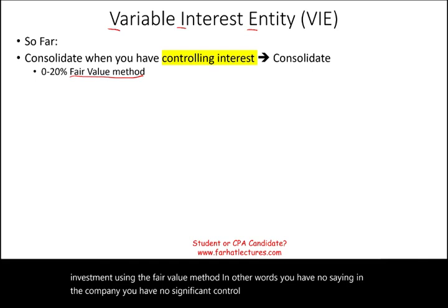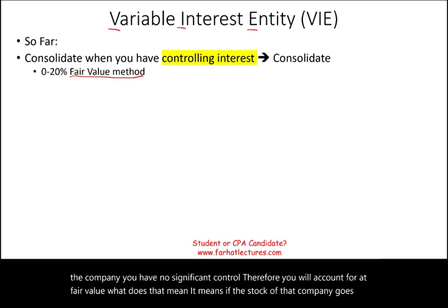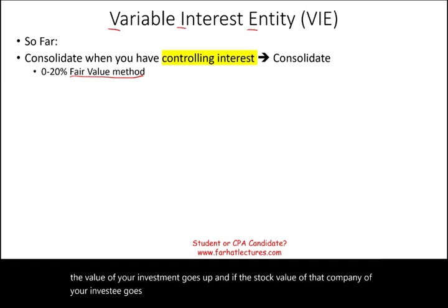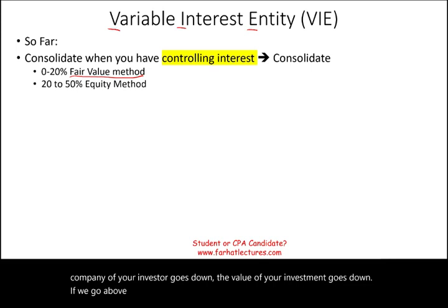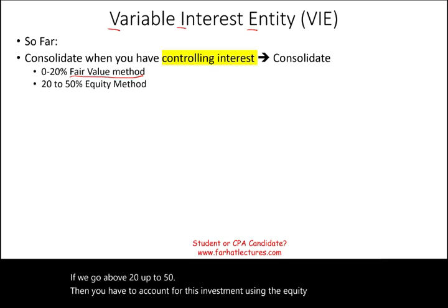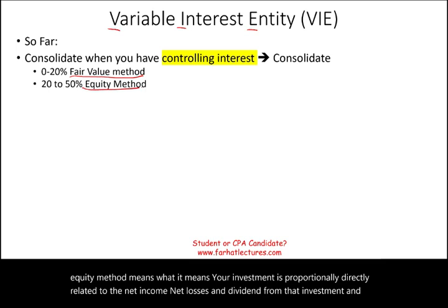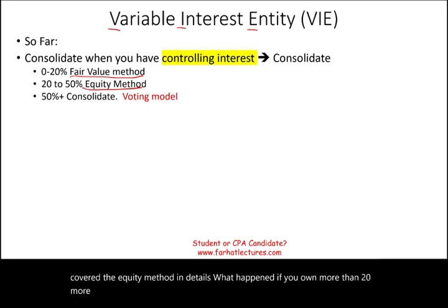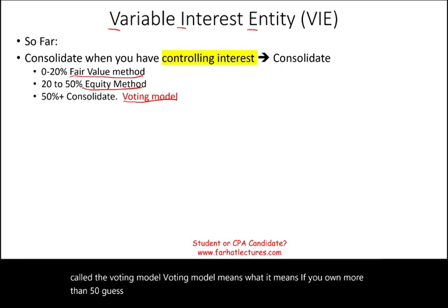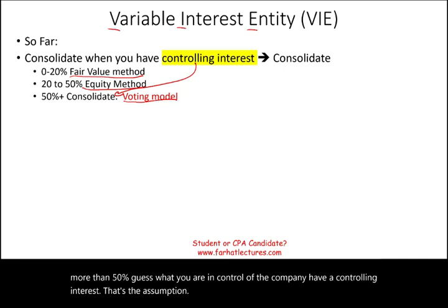If we go above 20% up to 50%, then you have to account for this investment using the equity method, which means your investment is proportionally directly related to the net income, net losses, and dividends from that investment. What happens if you own more than 50%? Here, you have what we call control, and you consolidate. This is called the voting model — if you own more than 50%, you are in control of the company and have a controlling interest.